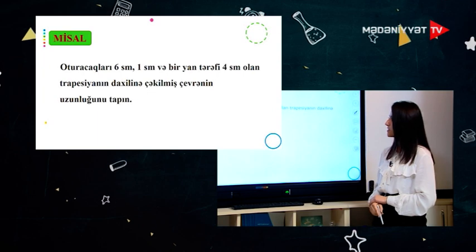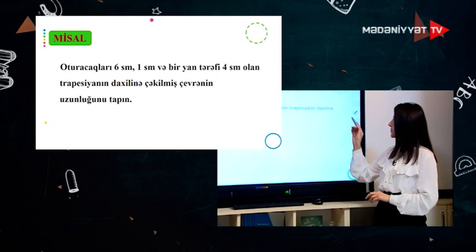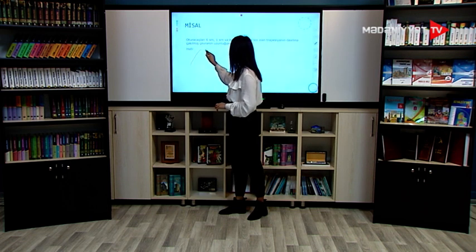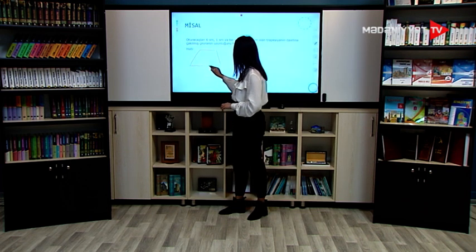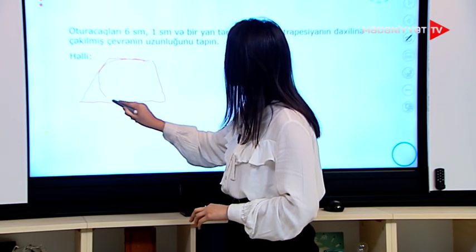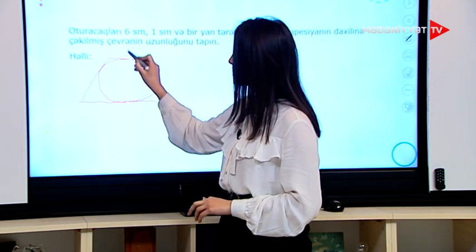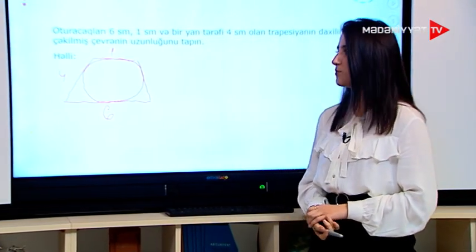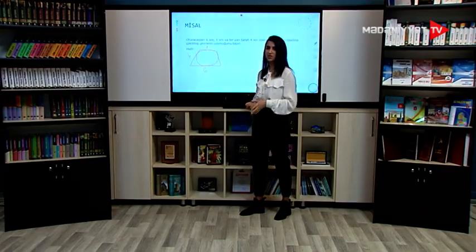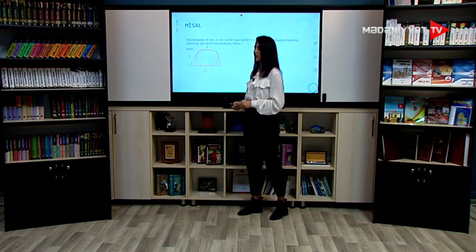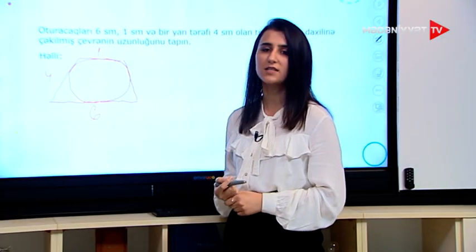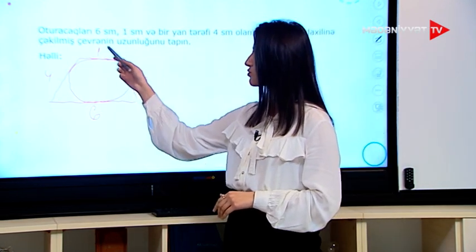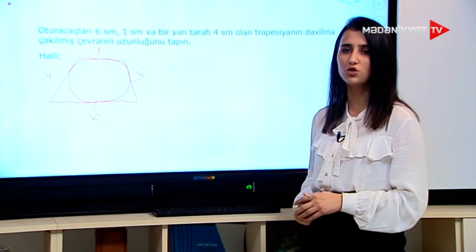Digər bir misalımıza baxaq: oturacaqları 6 cm və 1 cm, bir yan tərəfi 4 cm olan trapeziyanın daxilinə çəkilmiş çevrənin uzunluğunu tapın. İlk öncə biz bir trapeziya çəkirik. Oturacaqları 1 cm və 6 cm-dir, bir yan tərəfi 4 cm-dir. Bayaq dediyimiz xassəyə əsasən bilirik ki, əgər dörd bucaqlının daxilinə çevrə çəkilibsə, deməli qarşı tərəflərin cəmi bir-birinə bərabərdir. Yəni 1 + 6 = 7 cm-dirsə, 4 və digər yan tərəfi olmalıdır 3 cm ki, cəmləri bir-birinə bərabər olsun: 1 + 6 = 7, 4 + 3 = 7 cm.